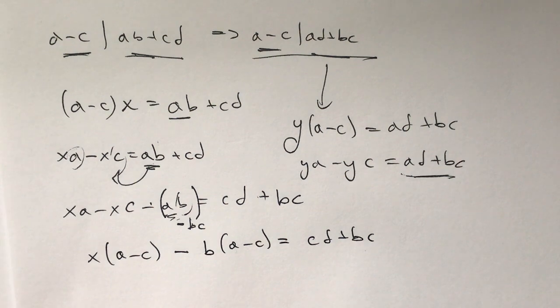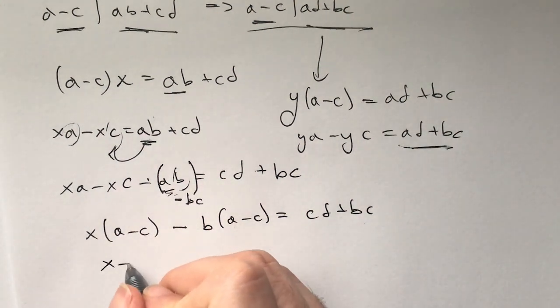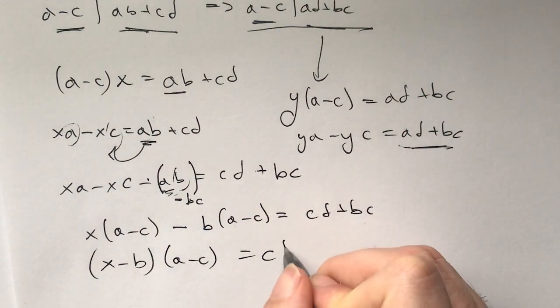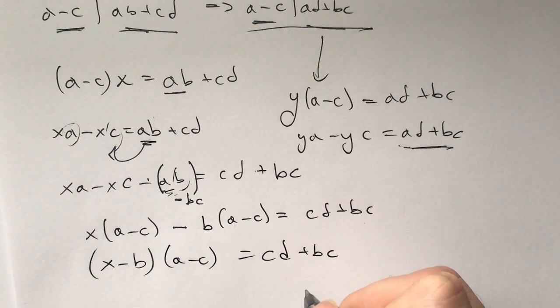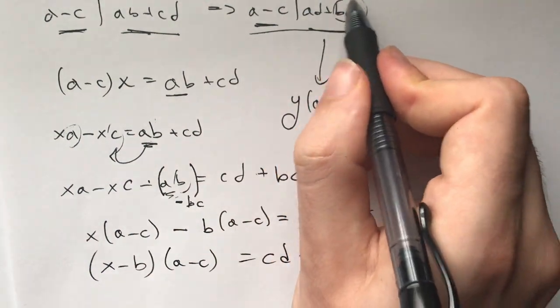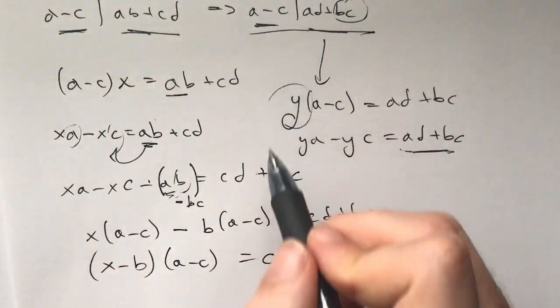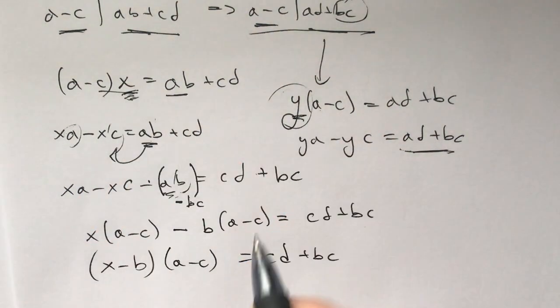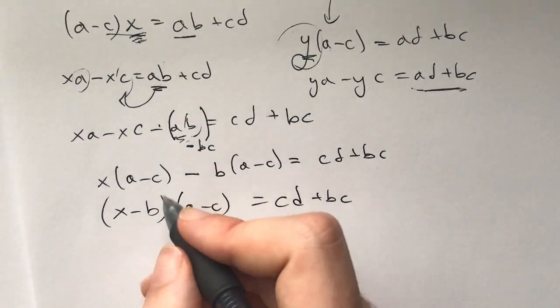So now from here I get that (x-b) times (a-c) equals cd plus bc. And now look, I've gotten one of the things I need and I may be able to now get y from this x.